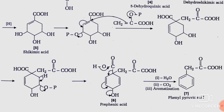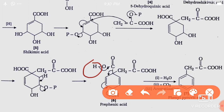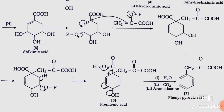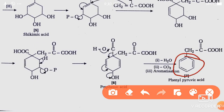Finally, prephenic acid undergoes dehydration, decarboxylation, and aromatization. Here aromatization takes place — hydrogen is eliminated, CO2 is eliminated, the ring further delocalizes, and prephenic acid is converted into phenylpyruvic acid. You can see there is purely the formation of a benzene ring. This phenylpropane structure is the aromatic nucleus.